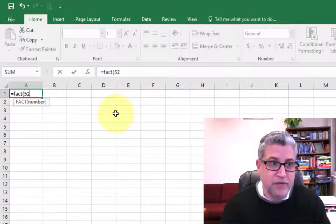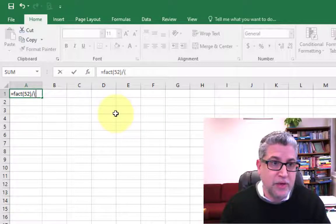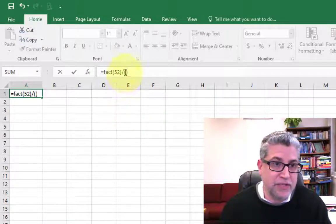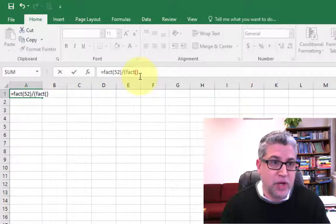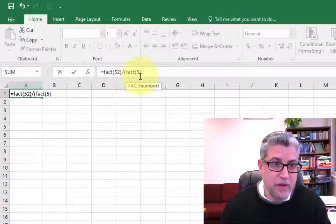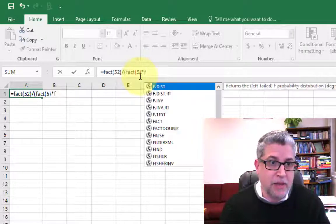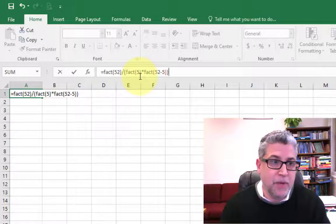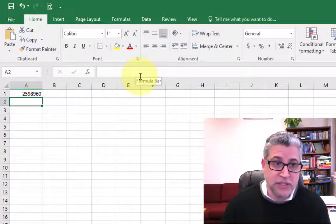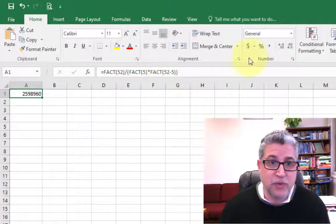So we want 52 and then we're going to divide by a bunch of stuff. Let's key in here. We want factorial of 5 and then we're also multiplying by factorial of 52 minus 5. And we can key that in and there seem to be a whole lot of different ways that you could have this.